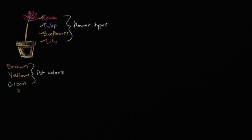So the question I ask to you is, how many types of flower and pot combinations can you walk out of this florist store with? For example, you could get a rose in a brown pot, you could get a rose in a green pot, or you could get a yellow pot that has a sunflower in it, or a yellow pot that has a lily in it. So how many scenarios could you walk out of that store with?